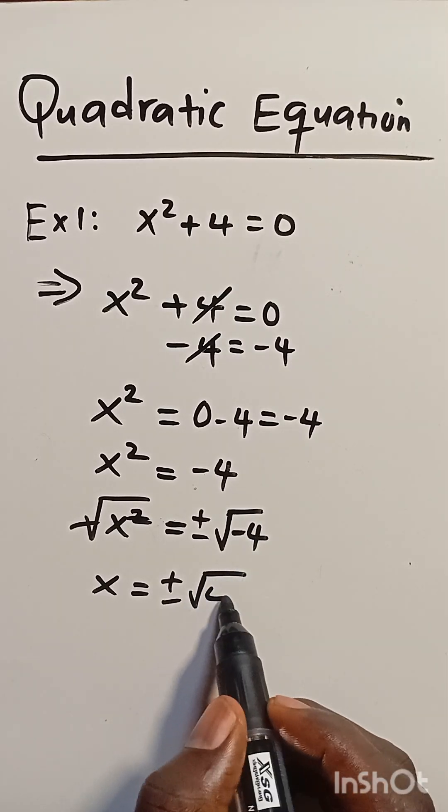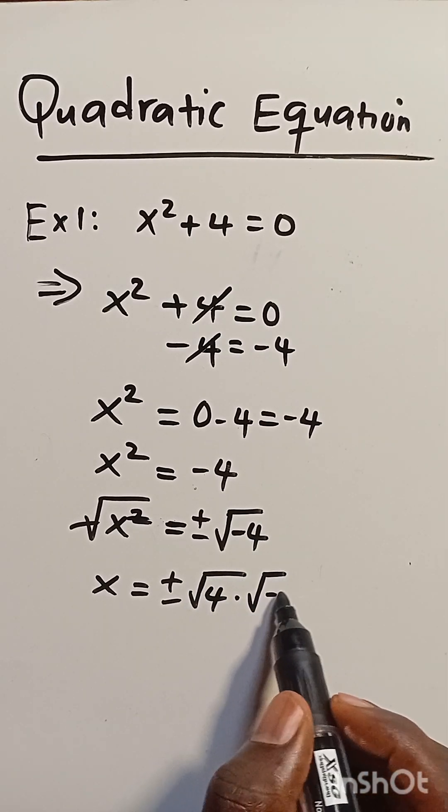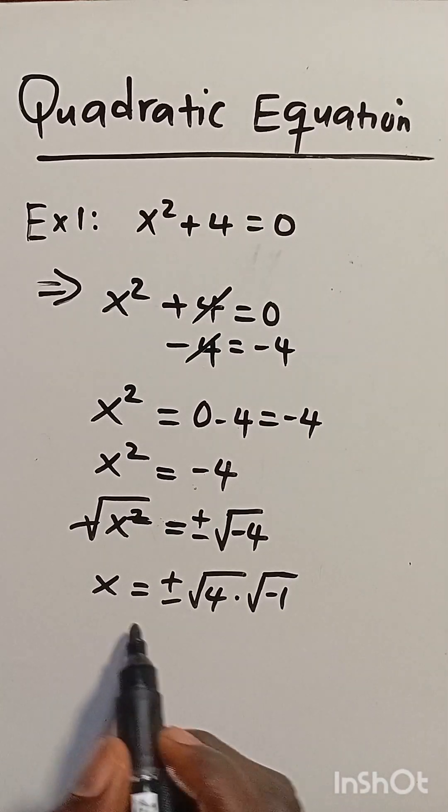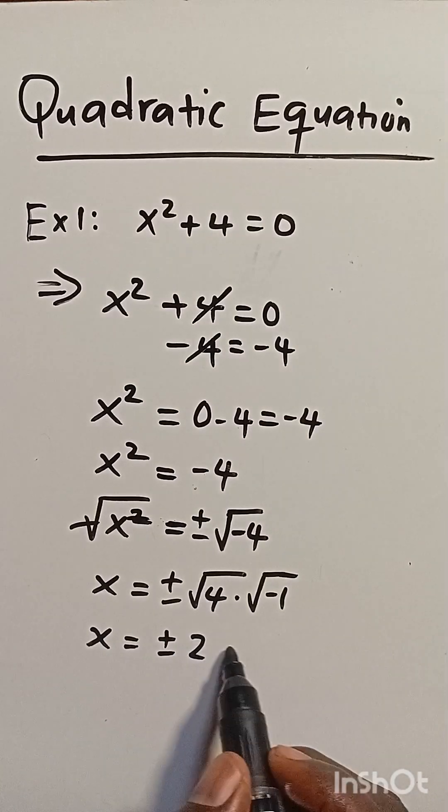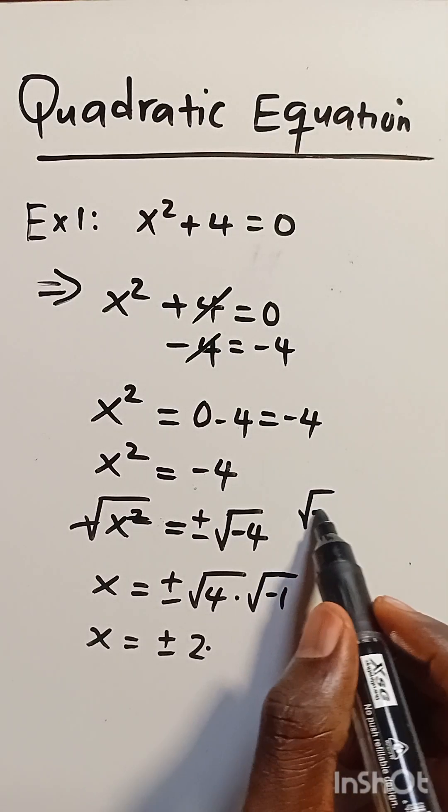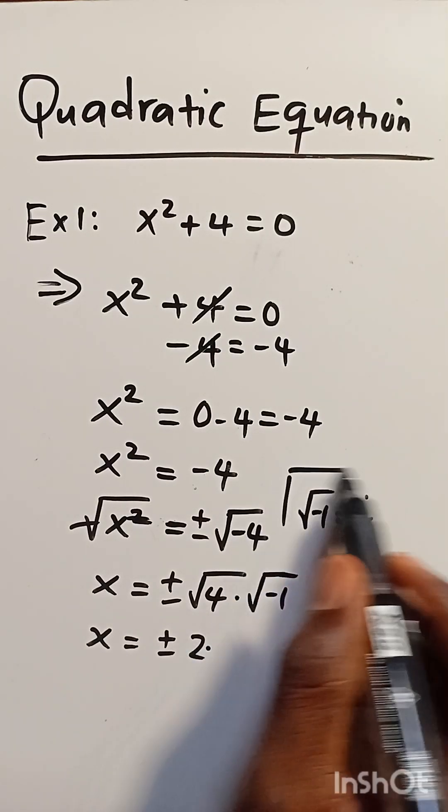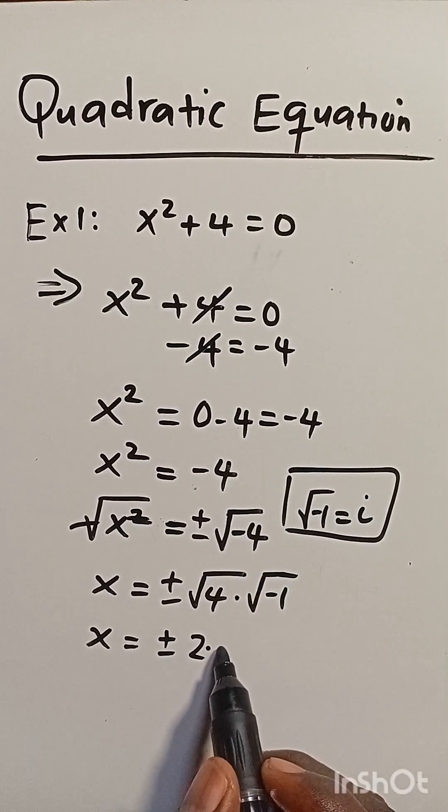We can simplify this as root of 4 times root of minus 1. X equals plus or minus... 4 is a perfect square, so we have 2. Root of minus 1 equals i in complex space, so this becomes 2i.